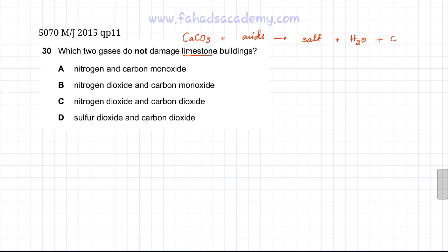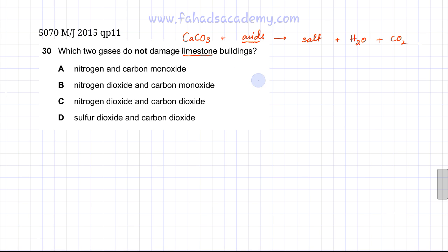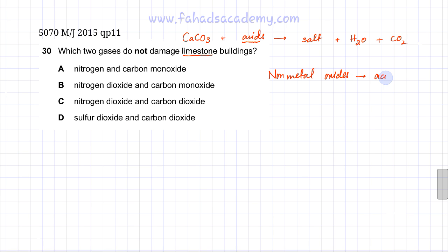So we are looking for the two gases which do not damage limestone buildings. Acidic gases are going to damage limestone buildings. Most acidic gases are non-metal oxides — for example, sulfur oxides and nitrogen oxides are all acidic.